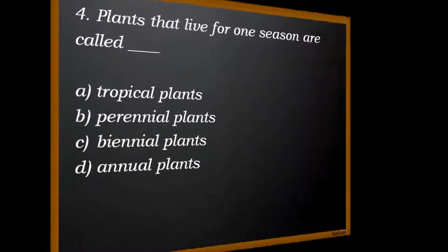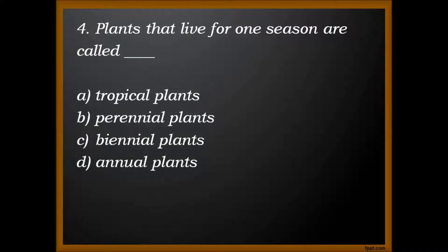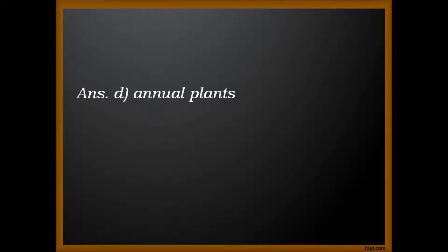Question number 4. Plants that live for one season are called A. Tropical plants. B. Perennial plants. C. Biennial plants. And D. Annual plants. Answer. D. Annual plants.